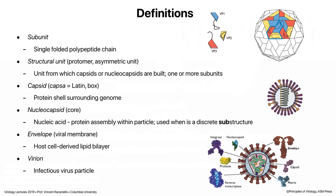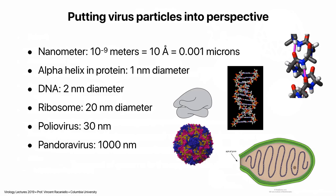Then we have envelope, which is just a viral membrane — I'll use both terms interchangeably. Always derived from the host cell; membranes of viruses always come from host cells. And then the virion, which I've used a lot already: it's the infectious virus particle. I will use virus particle to mean just that — which could mean non-infectious or infectious — but when I say virion, I specifically mean infectious virus particles.